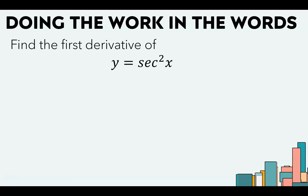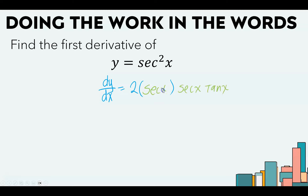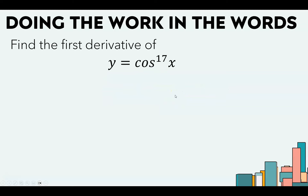For secant squared: we're taking the derivative of something squared. The derivative of something squared is 2 times that same something. Our something is secant, which has a rate of change of secant tangent. So we're always writing the same input and then multiplying by the derivative of that input with the chain rule.